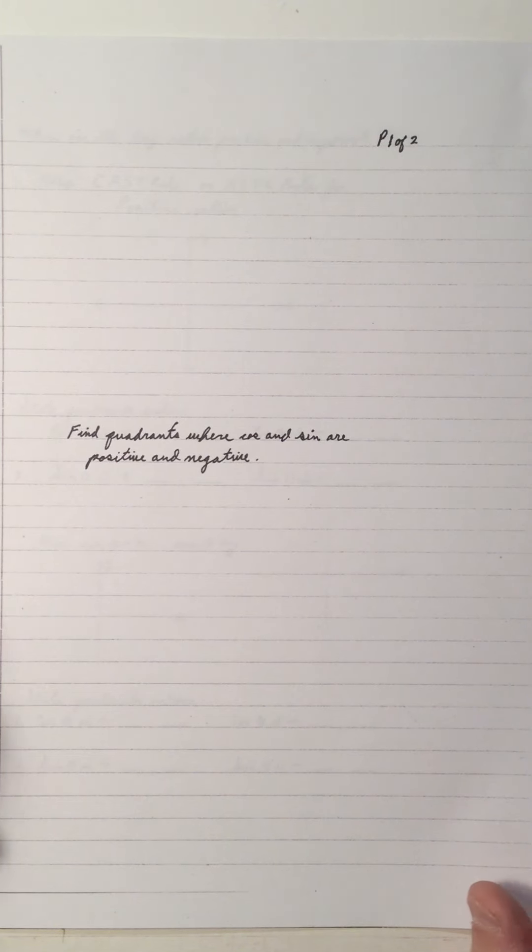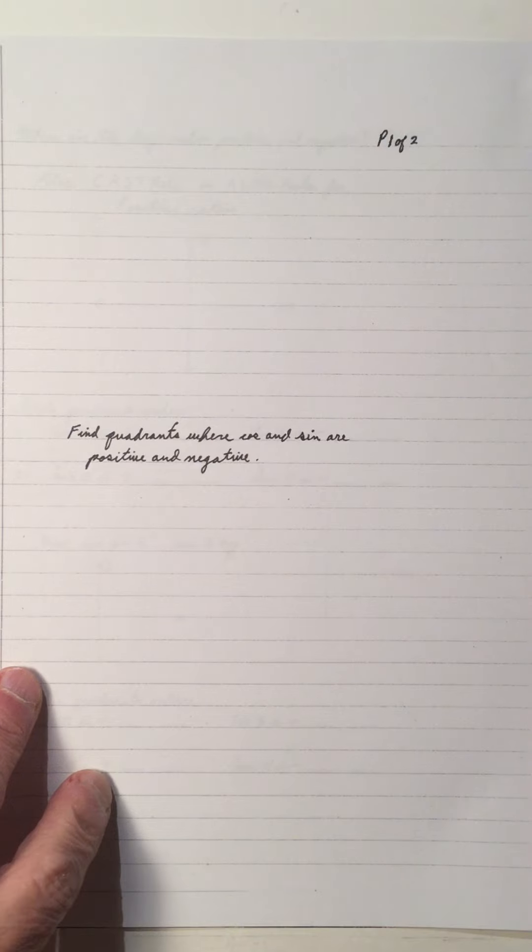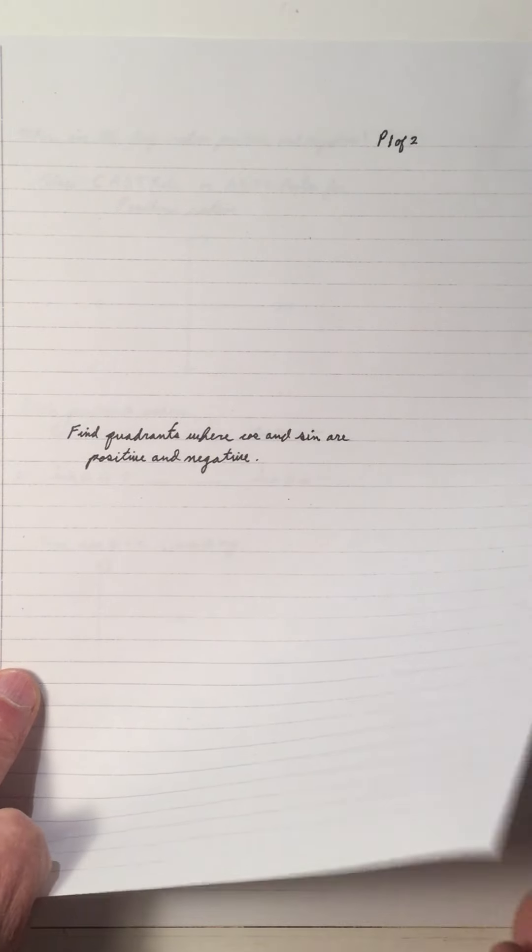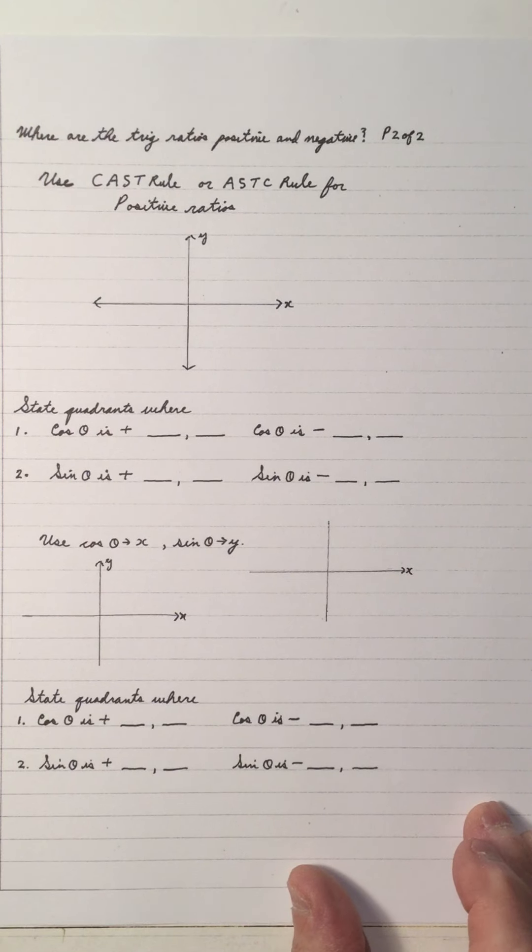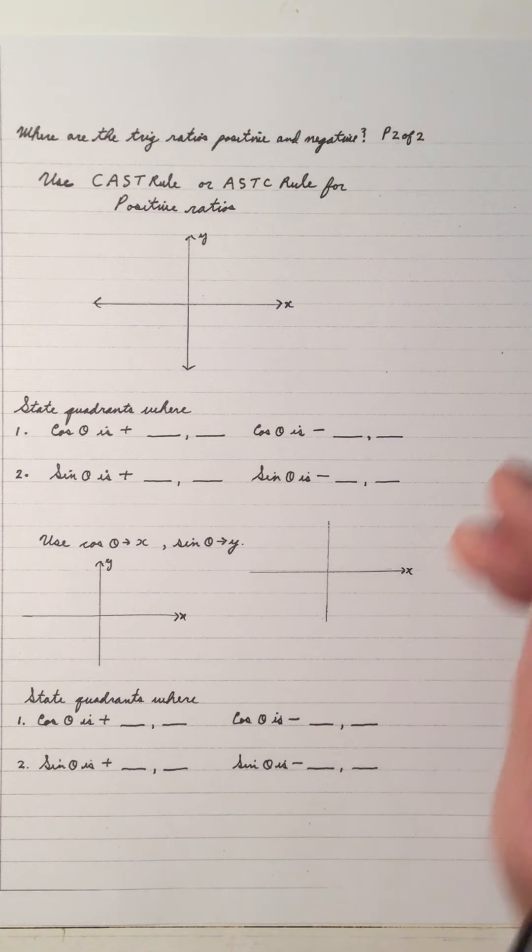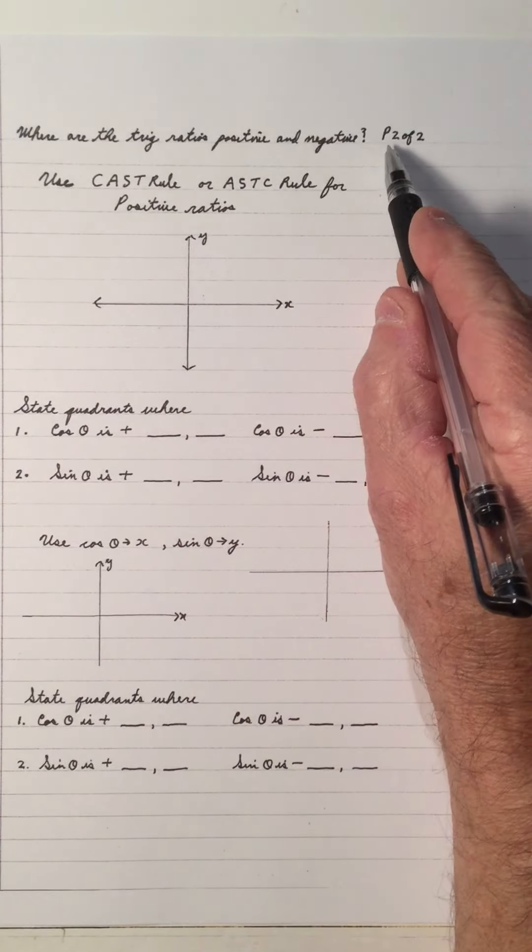Hi, welcome to my video on finding quadrants where cos and sine are positive and negative. We reviewed that in a previous unit in trig, but we'll review it again when we're solving equations just to make sure. Where are the trig ratios positive and negative?